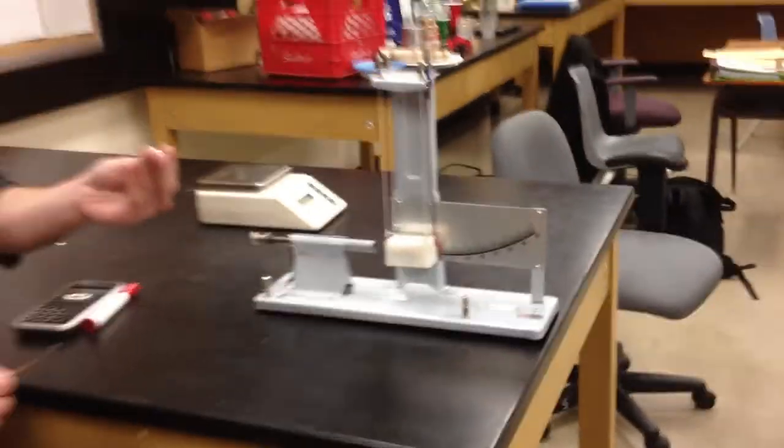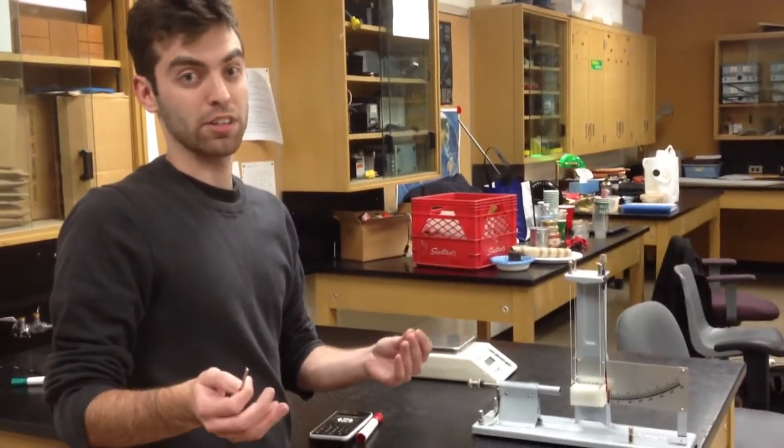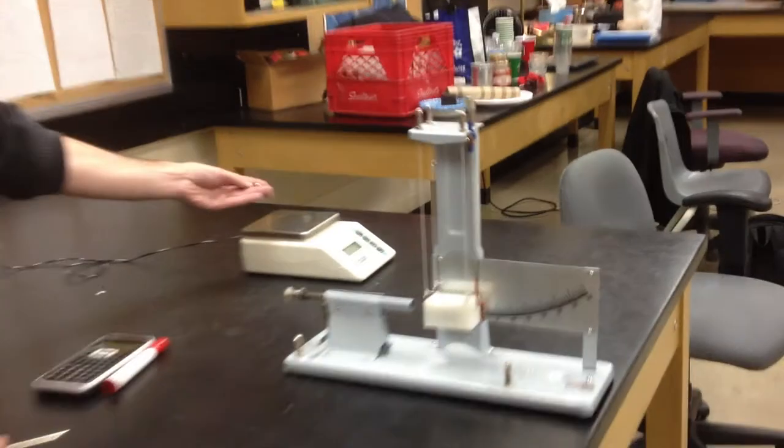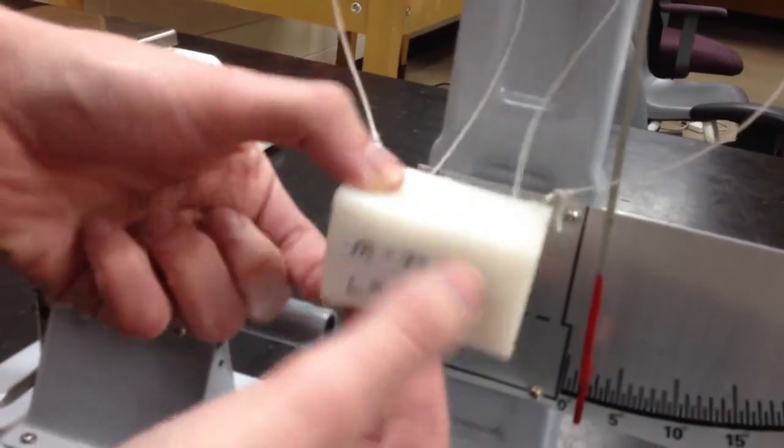In order to do this, first we had to measure the masses of the objects that are colliding. We used the scale to measure the mass of the pellet and we also have a known mass for the box which is 77.3 grams.